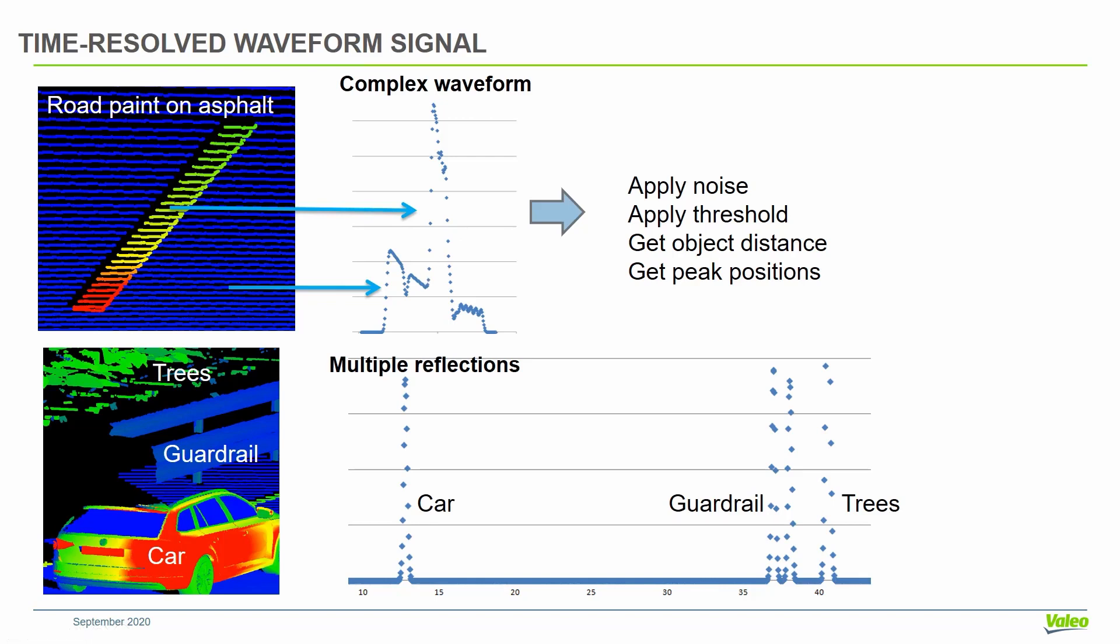The signal can be very complex. Then you can apply noise to the signal, apply a threshold, and you can get the detected distance, peak positions, and overall power of these peaks, or you can get the pulse widths from this complex waveform signal. The idea is to reproduce the actual electrical signal that would be processed inside your sensor.